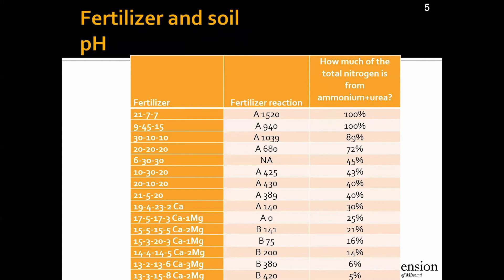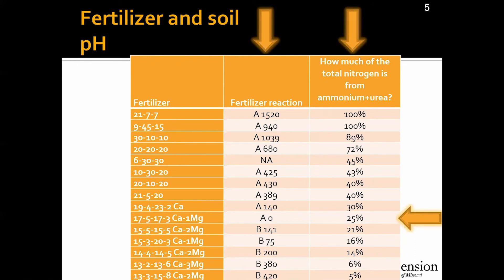Here we have a table with several fertilizers. Notice that in the second column we have a fertilizer reaction — a letter and a number. The first letter refers to whether this fertilizer is going to have an acidic or a basic reaction on the soil. The second number refers to the equivalent amount of calcium carbonate in that fertilizer per ton of fertilizer. In the third column we have how much of the total nitrogen in the fertilizer comes from ammonium and urea. Ammonium and urea in fertilizers tend to have an acidifying effect in the soil. If you're using any fertilizer that has over 25% of the total nitrogen coming from ammonium and urea, this fertilizer will have an acidifying reaction in the soil.